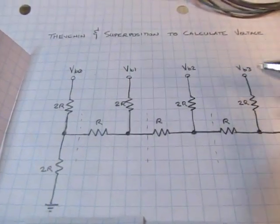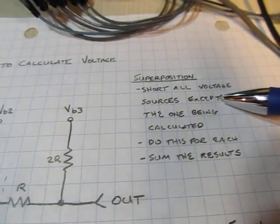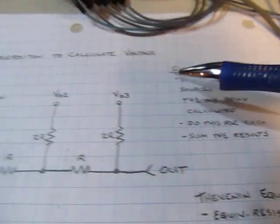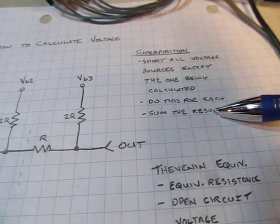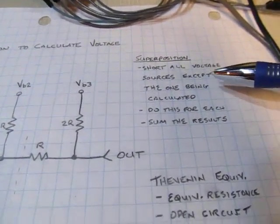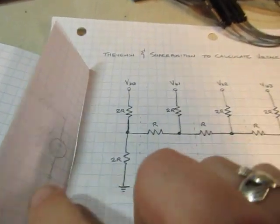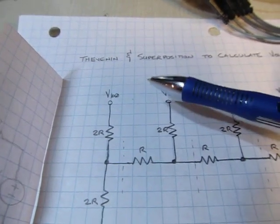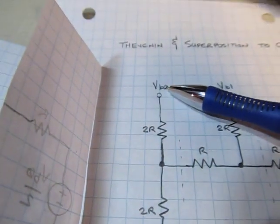Well, by superposition, what that allows us to do is say we'll short out all the voltage sources except the one that we're going to calculate for and do this for each of the various voltage sources. So we'd have to do it as many as 4 times. And then sum all those results, and that's how superposition works. We're also going to use the Thevenin equivalent circuits to kind of calculate out and help us out here. It actually works out to be pretty easy. So if we just start off by saying, well, let's start off in looking at the voltage contribution just from bit 0.